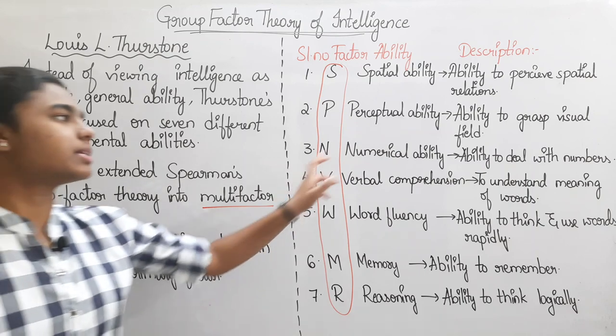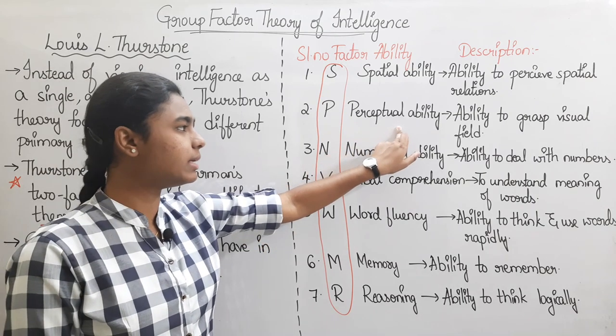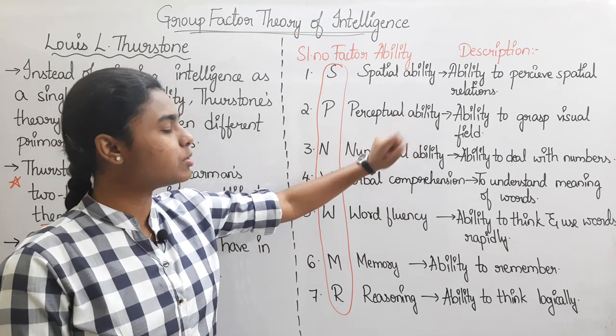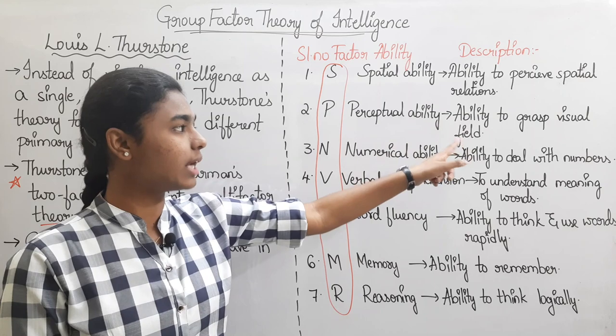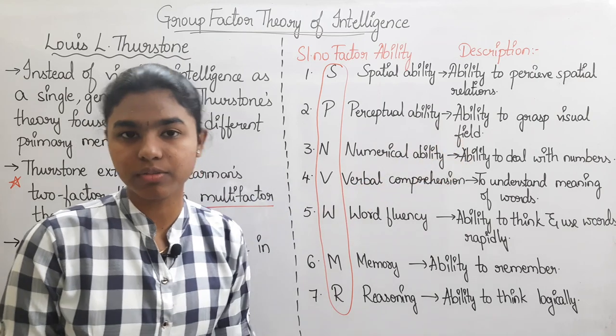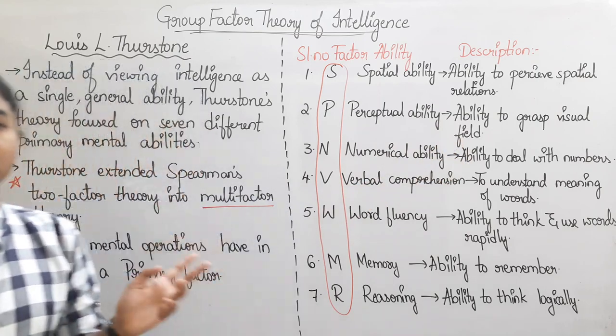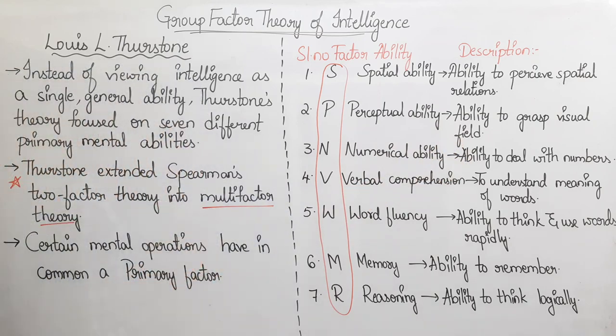The second one is Perceptual Ability. Perceptual Ability means the ability to grasp the visual field quickly and accurately.